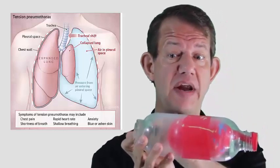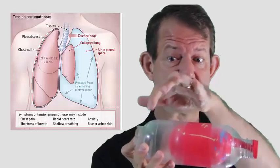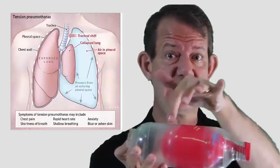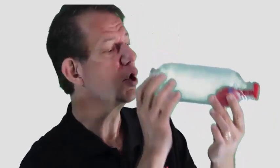Now the pneumothorax is this part, this air that you can see over here where the balloon isn't. Now the problem is if you go diving with this, then when you ascend after a dive it can not only make this collapse even further.